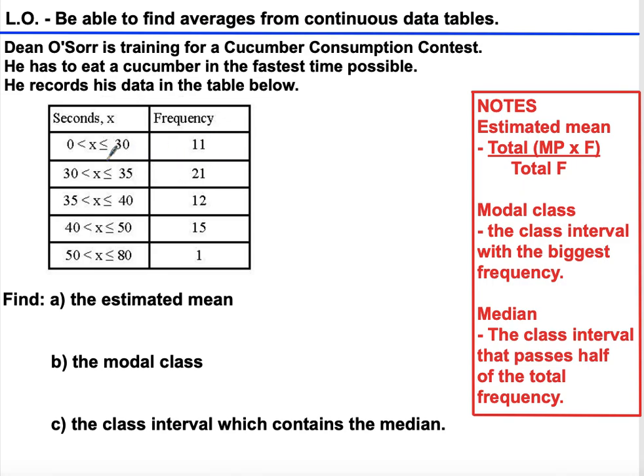Between 30 and 35, where 35 is included and 30 is not, he ate 21 cucumbers. Greater than 35 seconds, less than or equal to 40 seconds, he ate 12 cucumbers, and then there are two more class intervals with their respective frequencies.